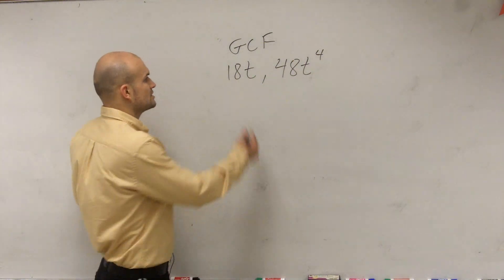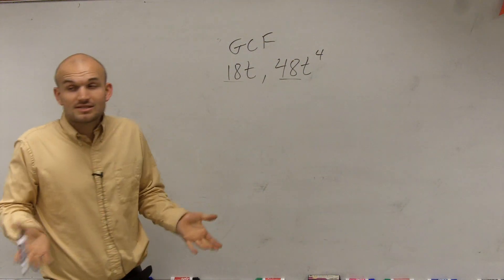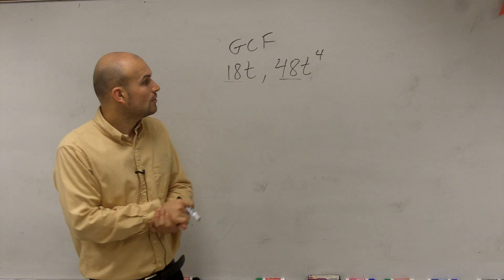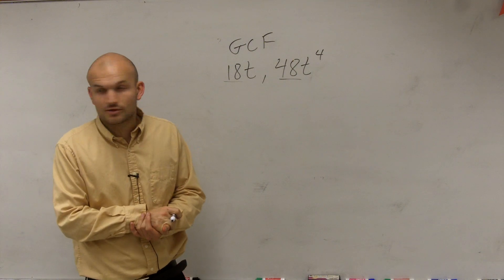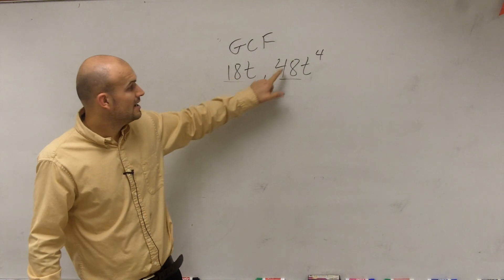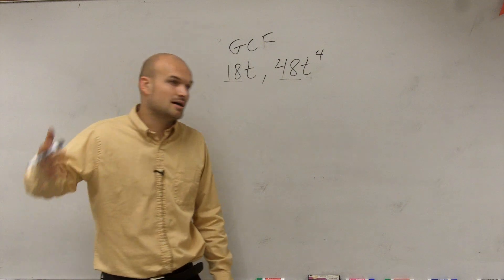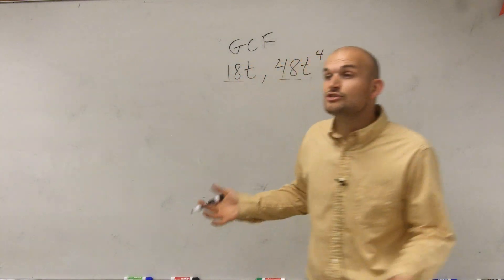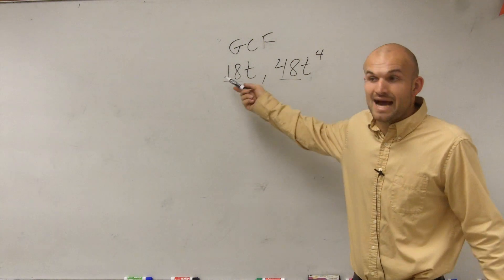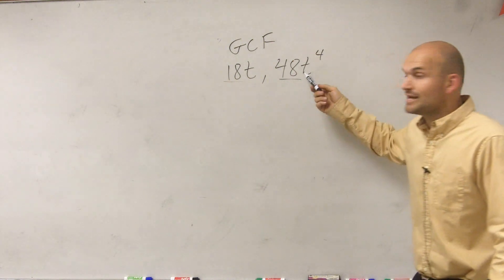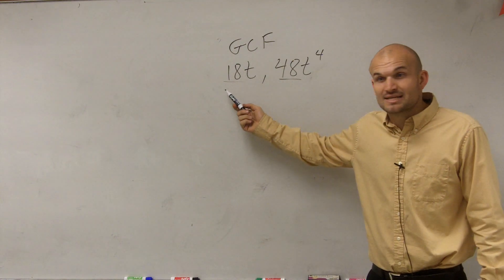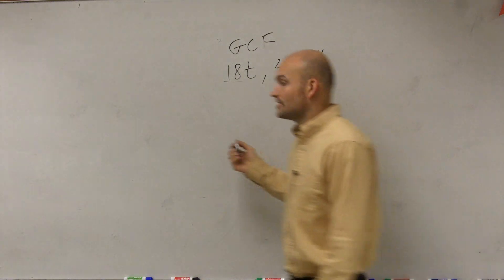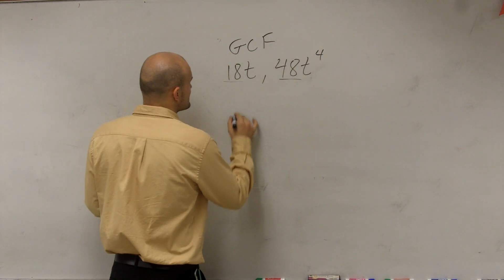So the first thing I like to do is compare 18 and 48. What is the largest number that goes into 18 and 48? 6 is one number — 6 definitely goes into 18 three times, and 6 times 8 is 48. But let's double check: is that the largest? I also know that 9 goes into 18, but does 9 go into 48? No. And 18 goes into 18, but does 18 go into 48? No, it does not. So 6 is the largest number.